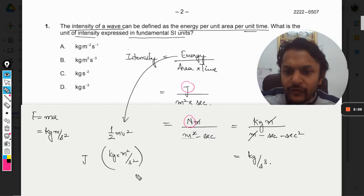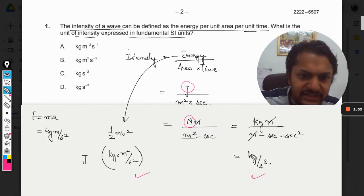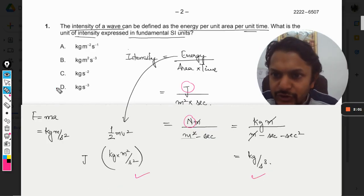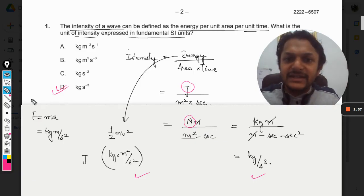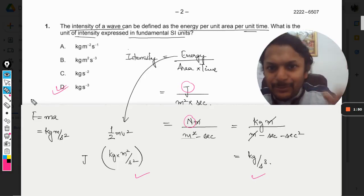So overall your answer will be kg per second cube. D will be the answer for us as per the intensity is concerned in terms of fundamental units. So with this, all the best, bye.